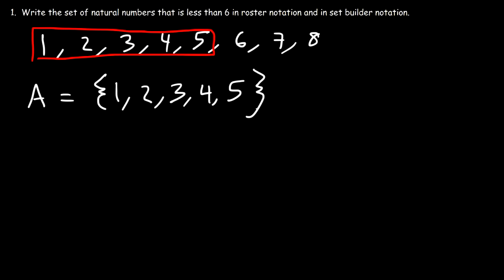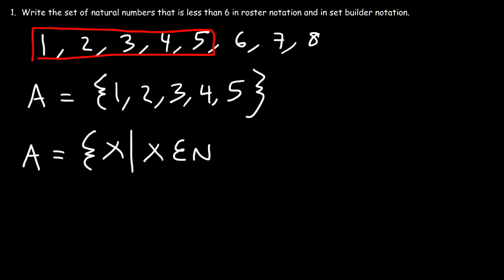Now let's describe it using set-builder notation. A is the set of all X such that X is a natural number, and we need to describe the limits of these values: X is greater than or equal to 1, but less than or equal to 5. That's how we can describe this set using set-builder notation.